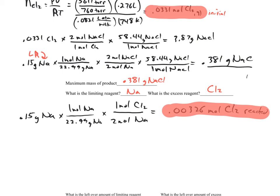I'm going to take the 0.0331 moles of chlorine gas that's initial, and we're going to subtract 0.00326 moles of chlorine gas that reacted at the same time as the sodium. That's going to give us 0.0298 moles of chlorine left.